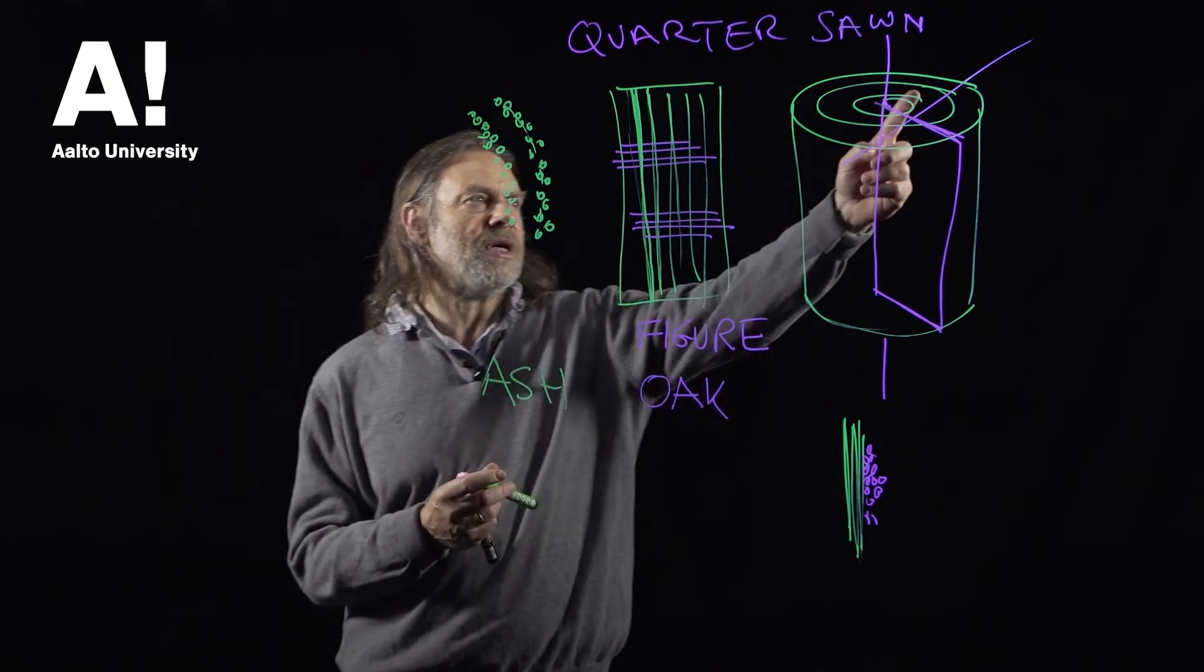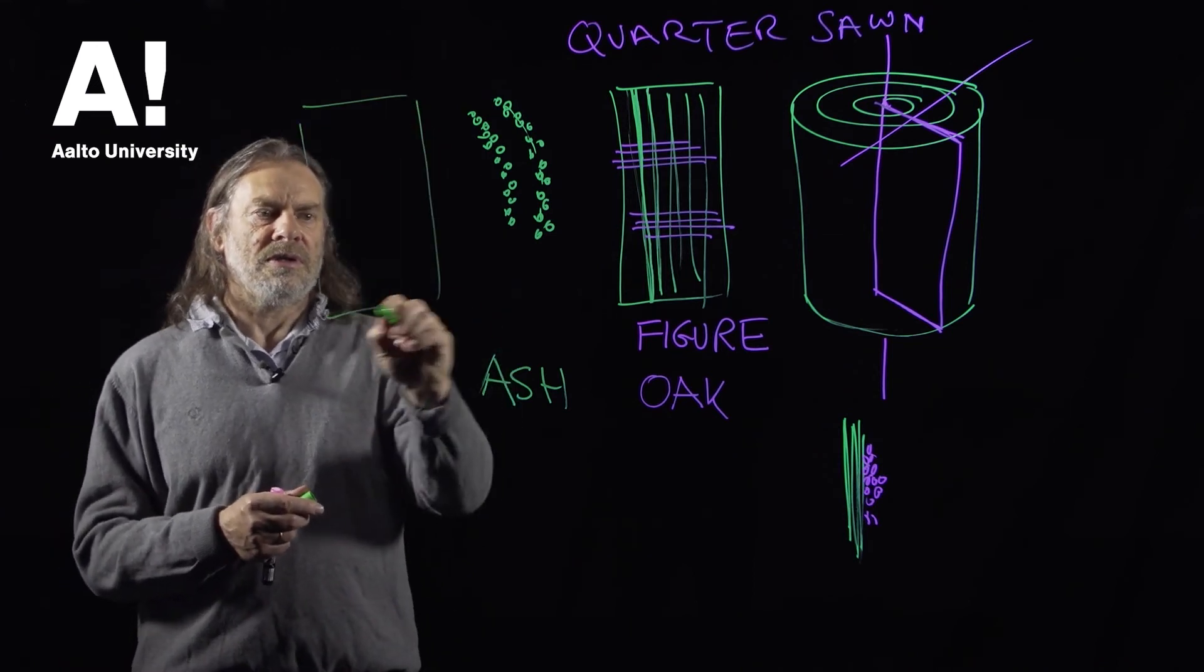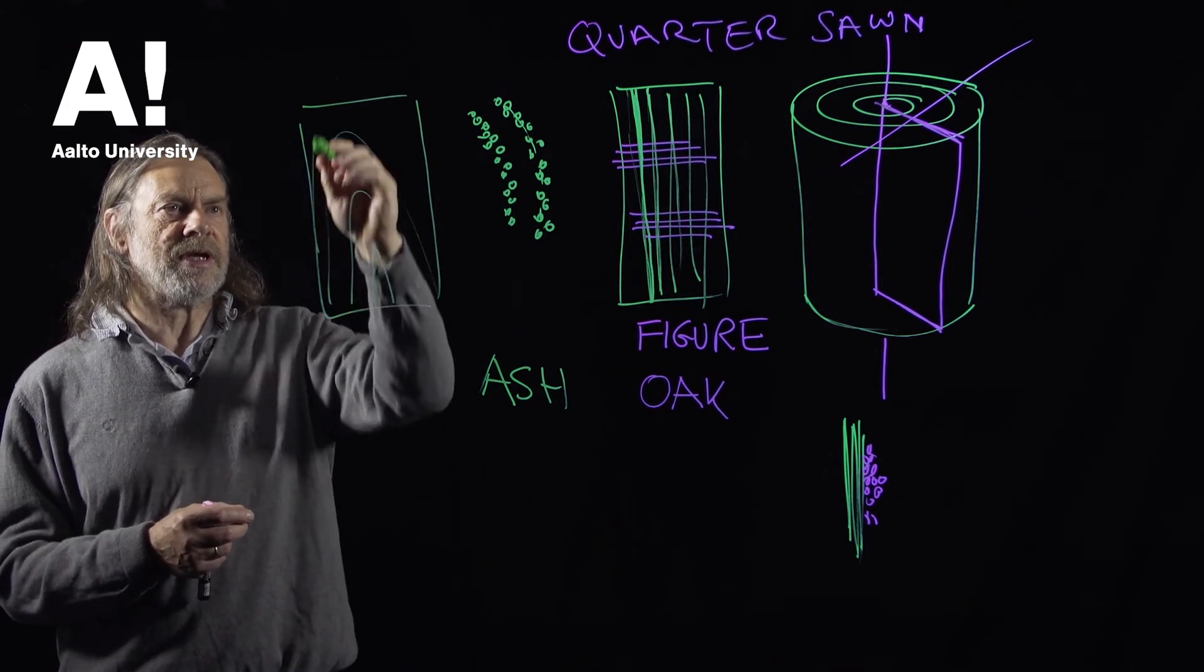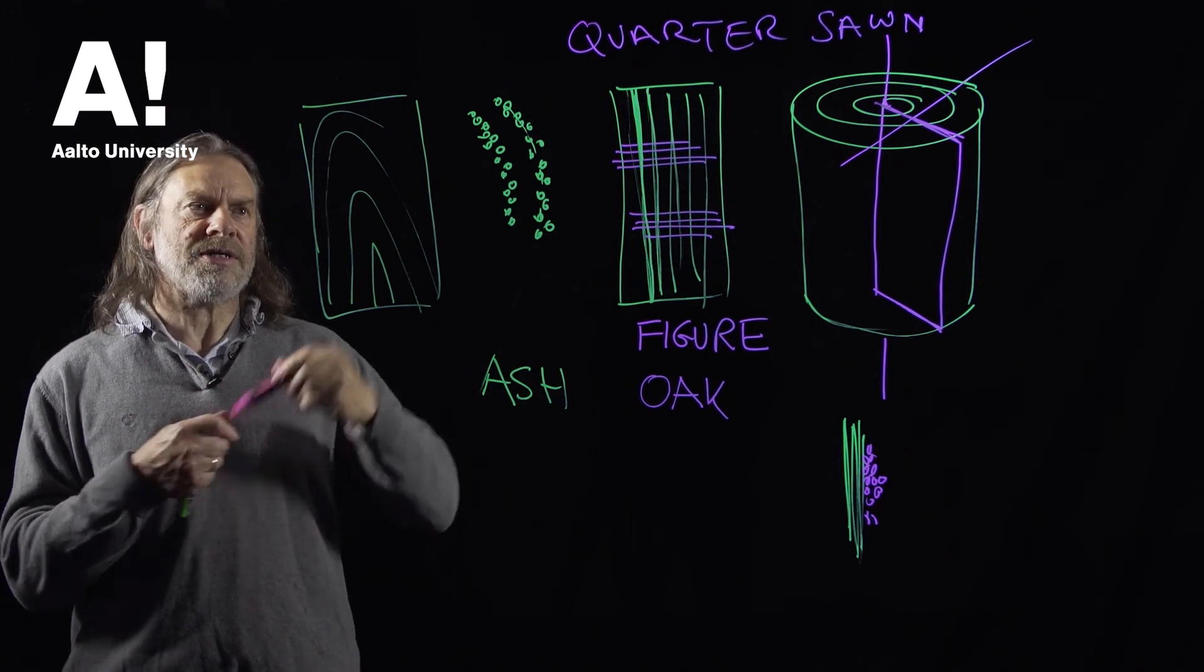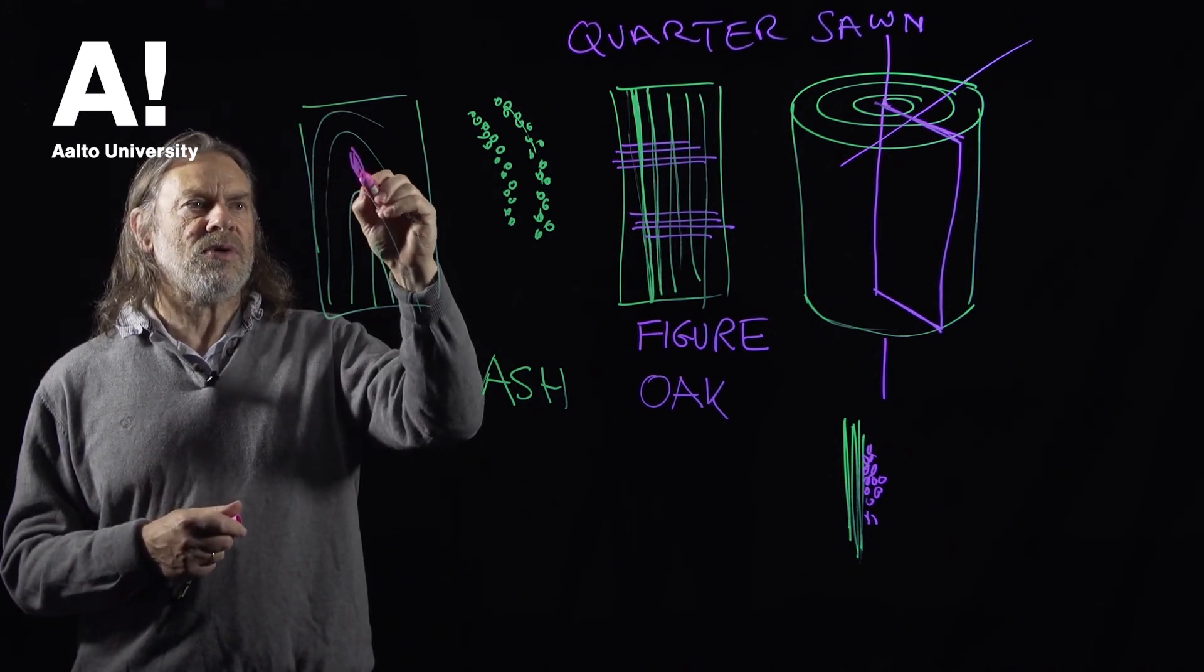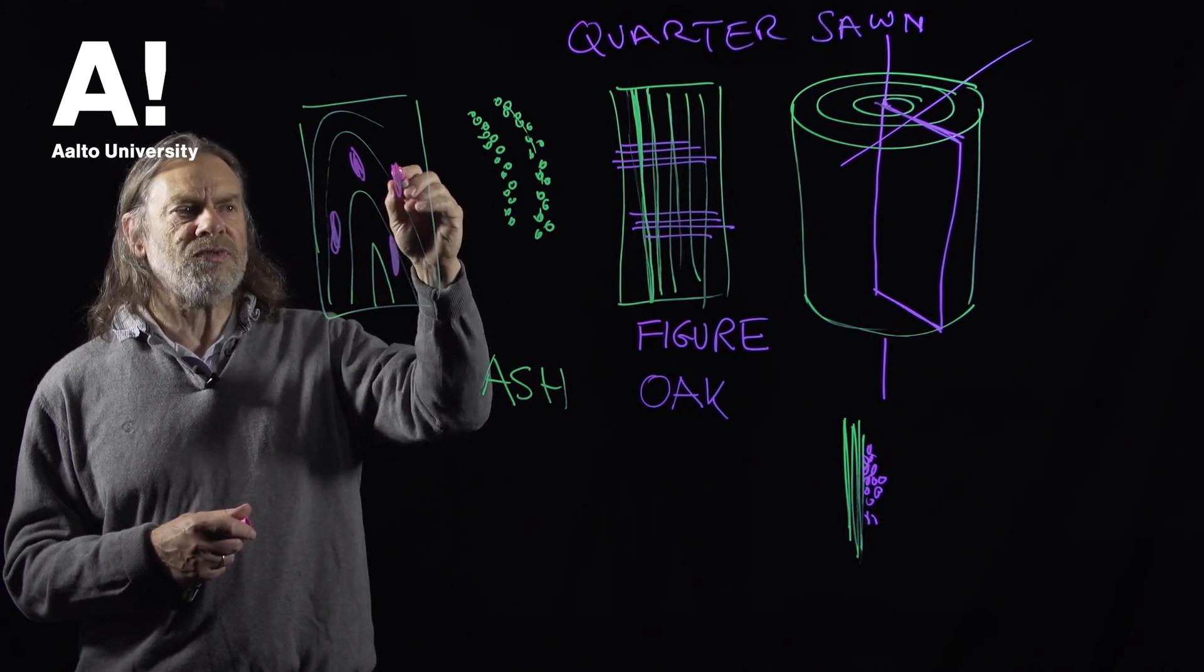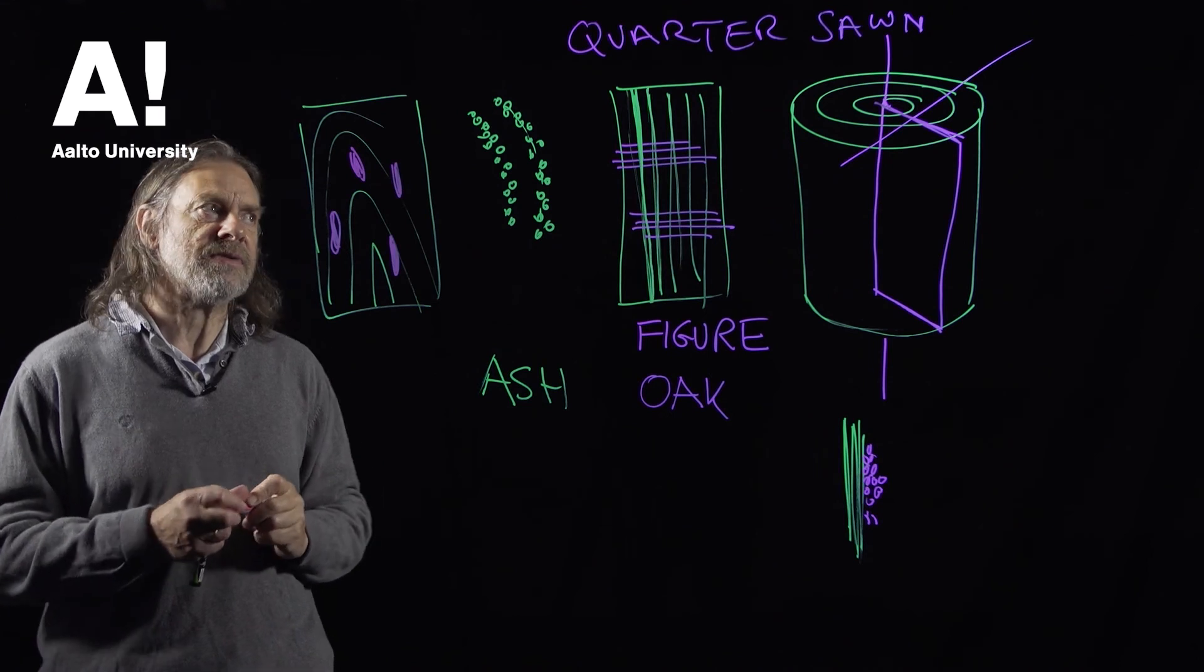So if we were to look at a tangential cut of the oak, the appearance there would be we'd get these growth rings which of course are made up of these pores, but we would see the multi-seriate rays rather more obviously so they'd be showing up. So with a softwood, because they're uniseriate, you hardly see them at all in that particular direction.